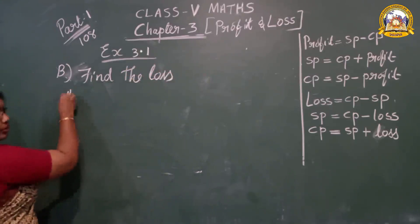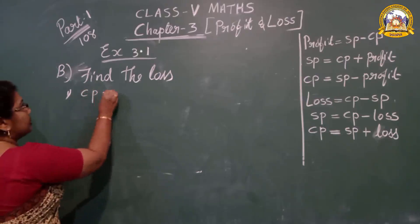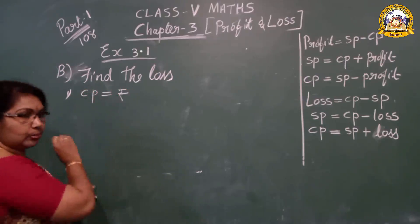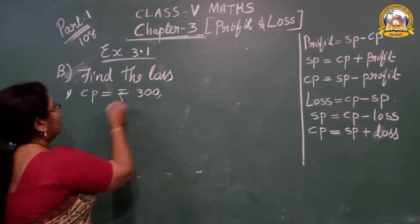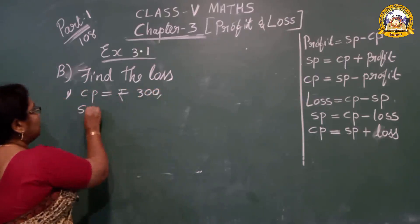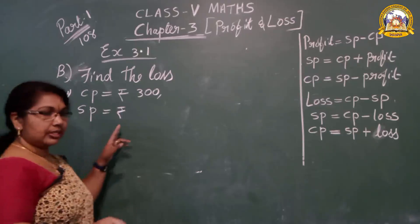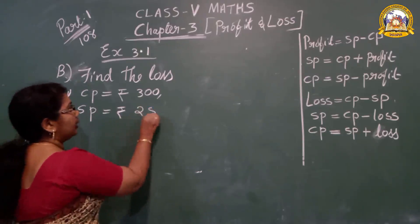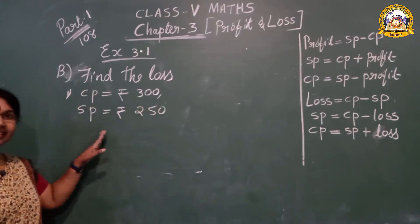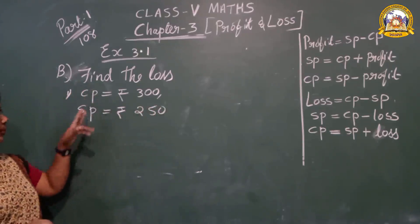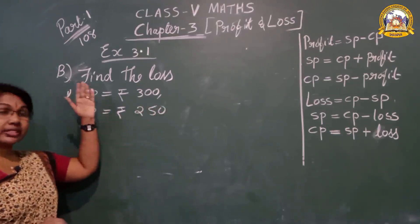First one: CP is equal to rupees 300, SP is equal to rupees 250. Look here — which is greater, CP or SP? CP is greater.